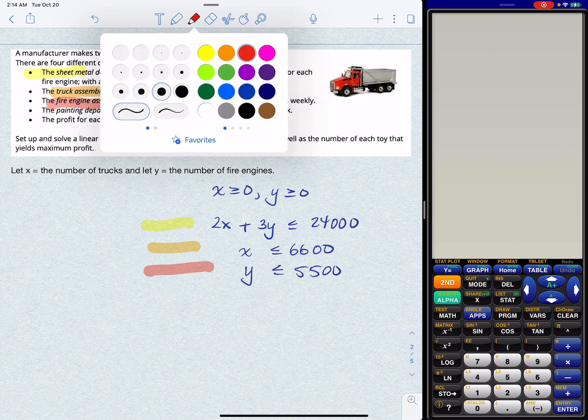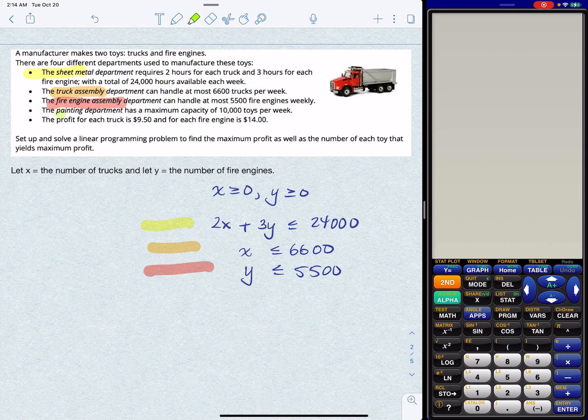All right. Moving on to the next one. So we have the painting department telling us, hmm, I can paint as many as 10,000 toys. Now that's between the two. So this means, you know, if x is the number of trucks and y is the number of engines, x plus y is the total number of toys. And we're told that has to be less than or equal to 10,000.